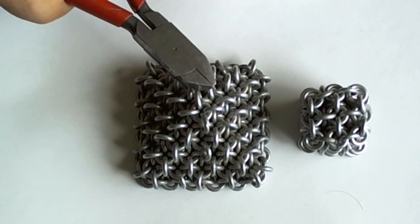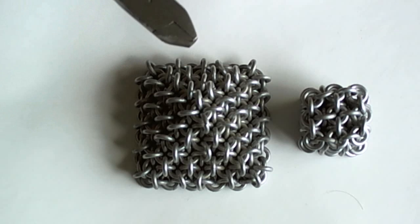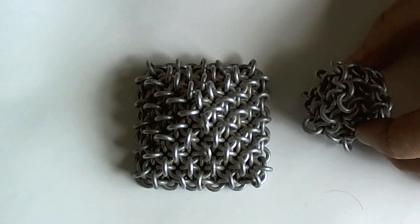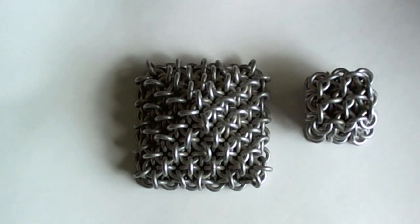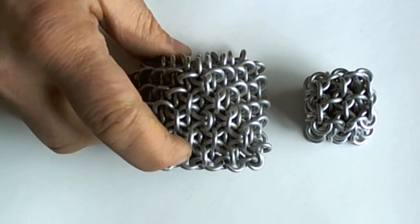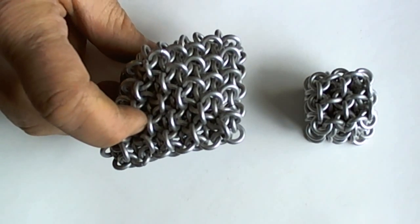When you make sheets, sort of stacked sheets of oriental four-in-one, they literally stand up by themselves. You can see by this - this is a cube and this is a pyramid, exactly the same weave, just different configurations.